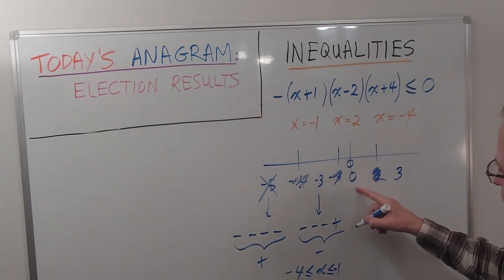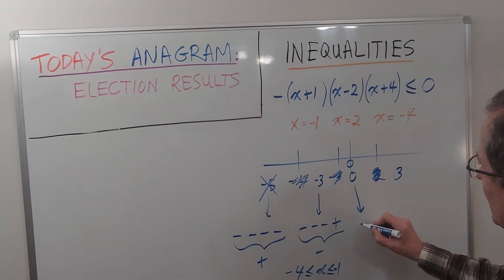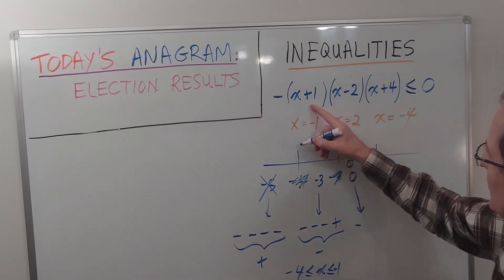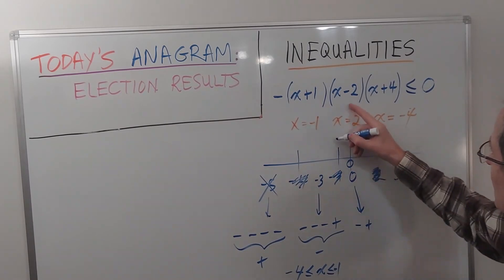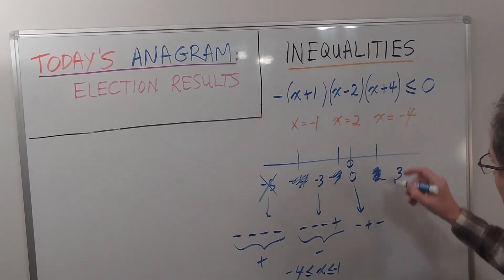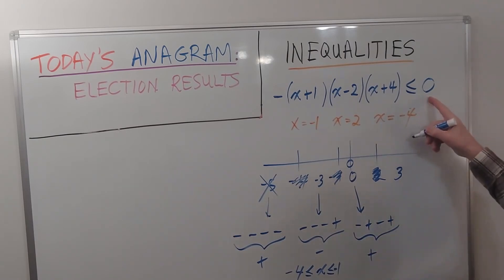Now if I pick 0, I get positive, negative, positive. That's going to give me a positive, and I don't want that either. It's got to be negative or 0.